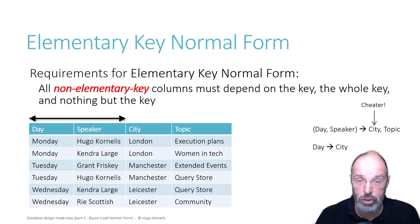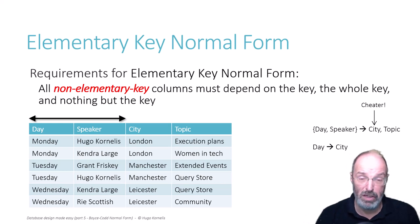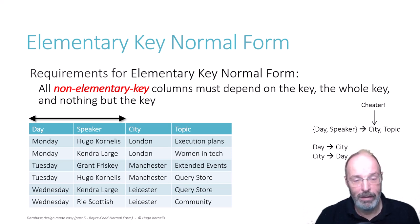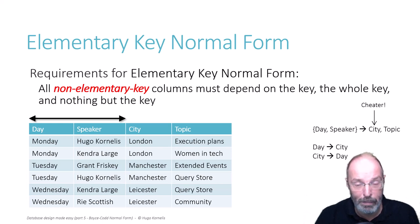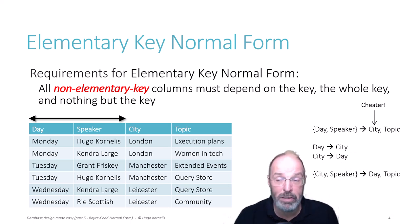It is still relevant because it allows us to define that candidate key, but it is important for elementary key normal form to recognize this is a cheater. For a traveling conference, it is theoretically possible to stay two days in London, but the organization only stays one day in each city. So there is also a functional dependency where city determines the day. Given that functional dependency, we can now derive an extra key and some extra functional dependencies. The combination of city and speaker determines the day — that is a cheater functional dependency because city by itself already determines the day.